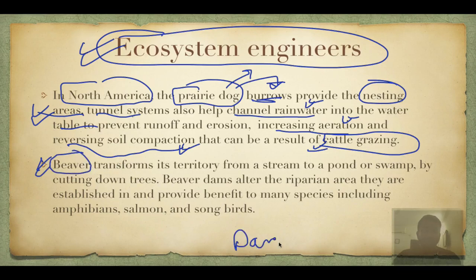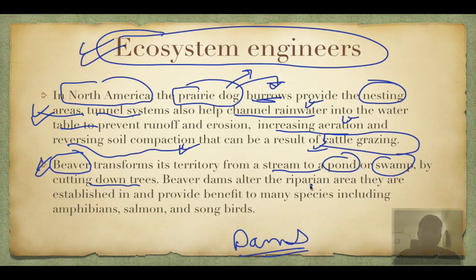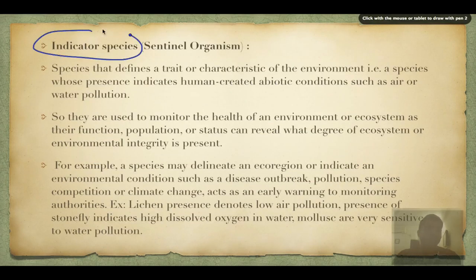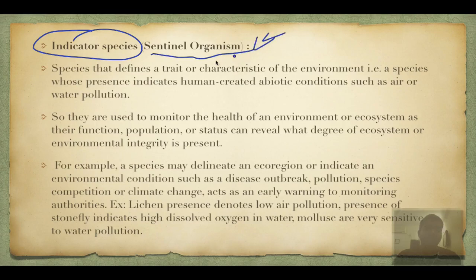Beavers are also ecosystem engineers. They cut trees and dam streams to create ponds or swamps. The resulting riparian area provides benefits to an enormous number of species — amphibians, salmon, songbirds, etc. If beavers did not cut trees and form dams, this entire ecosystem would not exist.